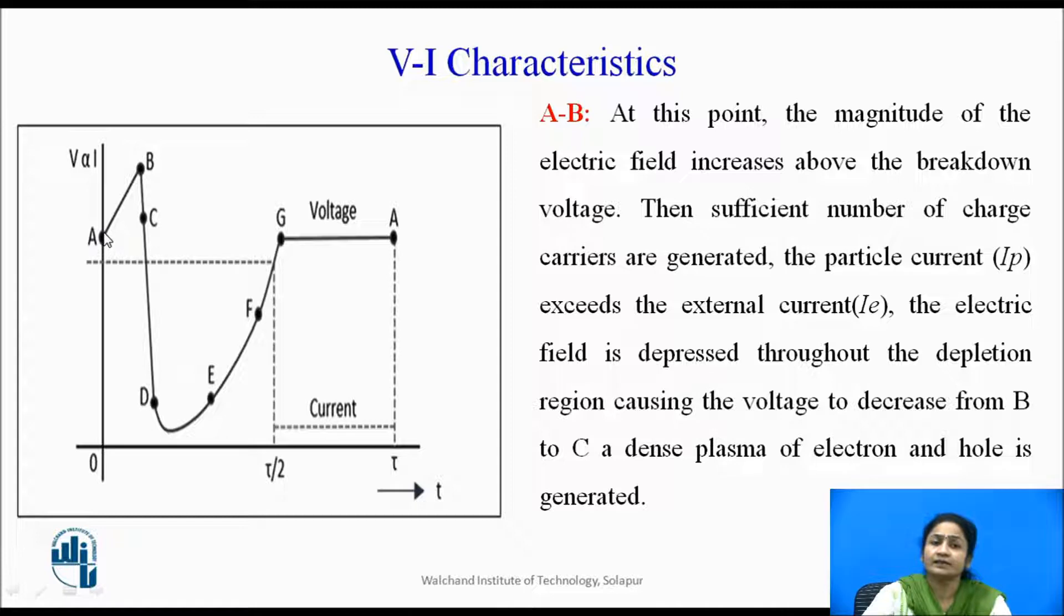From point A to B, at this point, the magnitude of the electric field increases above the breakdown voltage. So sufficient number of charge carriers are generated.